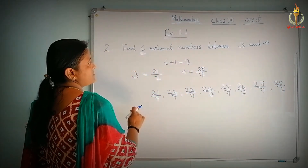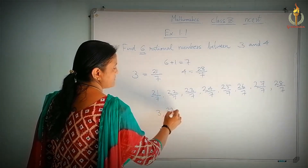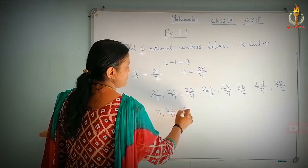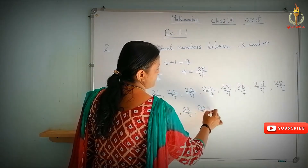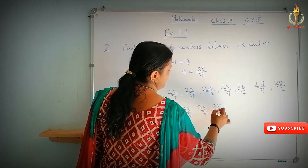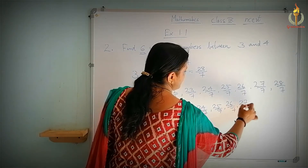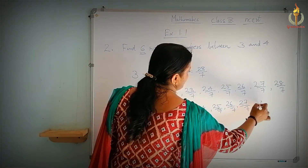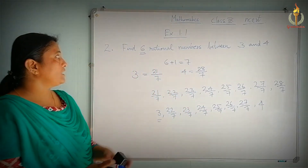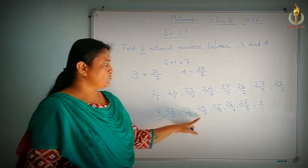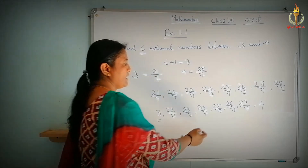So the 6 rational numbers between 3 and 4 — this is the final answer: 22 by 7, 23 by 7, 24 by 7, 25 by 7, 26 by 7, 27 by 7. These are the 6 rational numbers between 3 and 4. This is the answer.